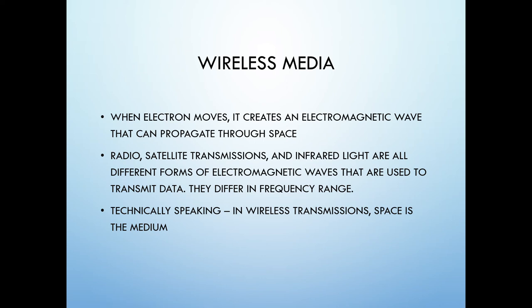In this video we will be discussing wireless communication and one type of wireless media, the terrestrial microwave. Wireless media transmit data using electromagnetic waves. All wireless media work with the simple law of physics: when an electron moves in a cable, an electromagnetic wave is going to be created around the cable, which can propagate through the air with proper antennas.